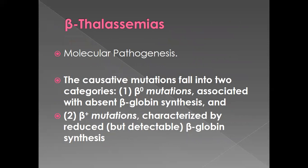In beta thalassemia, the causative mutations fall into two categories. Beta-zero mutations, in which there is absent globin synthesis — no beta globin production at all. And beta-plus mutations, in which there is reduced beta globin synthesis that is detectable — beta chains are produced but less than normal.